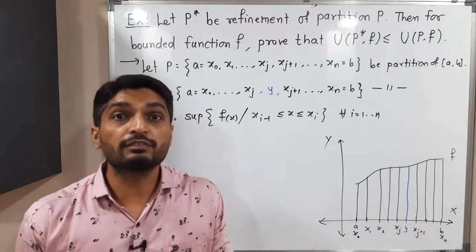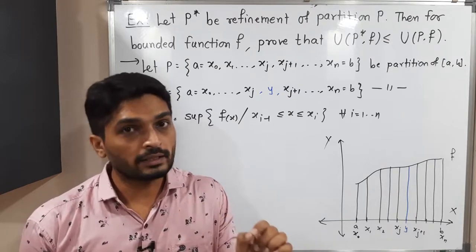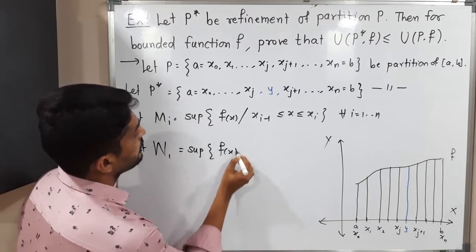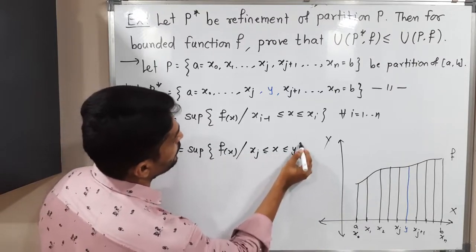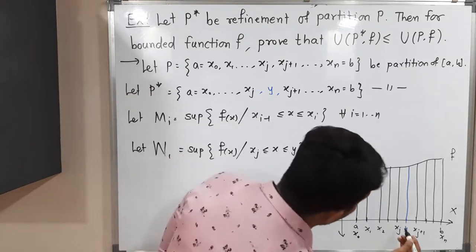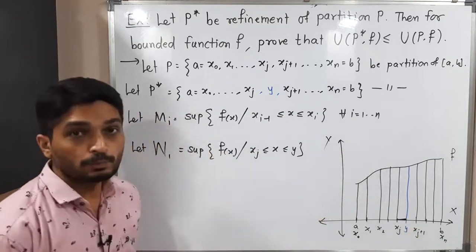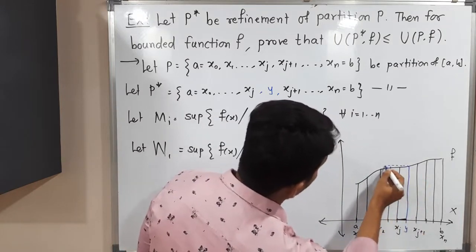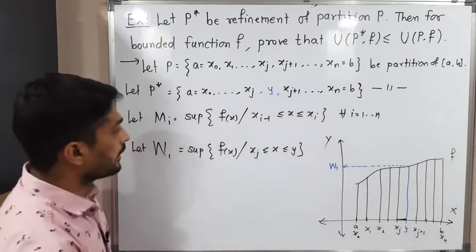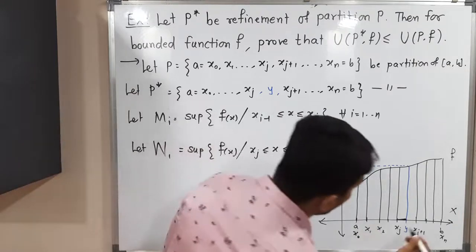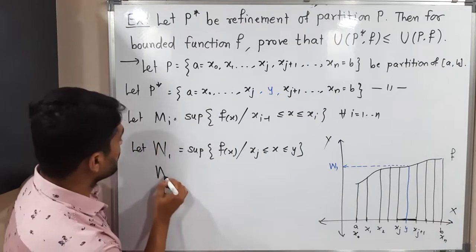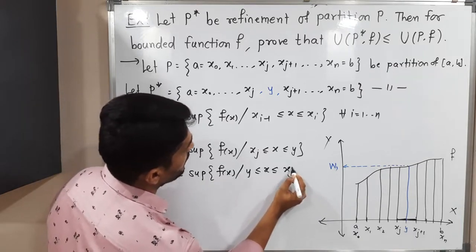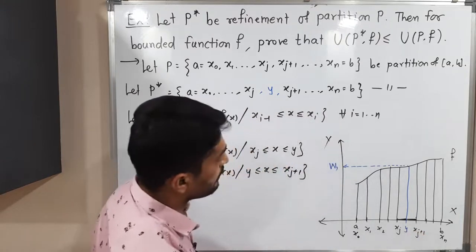So I am calling them W₁ and W₂. Let W₁ = supremum of F(x) for Xⱼ ≤ x ≤ Y. For this interval I am considering supremum W₁, and as you can see in the diagram, supremum here will be at point Y, giving W₁. Now I define W₂ for the next interval: W₂ = supremum of F(x) such that Y ≤ x ≤ Xⱼ₊₁. For this interval the function has supremum W₂.